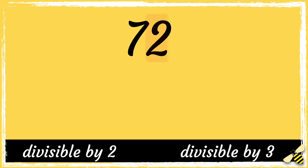Here is the number 72. First let's see if this number is divisible by 2. The last number is even, so this number is divisible by 2. Now we need to see if it's divisible by 3. To see if it's divisible by 3, we add the digits in the number and see if the sum is divisible by 3.